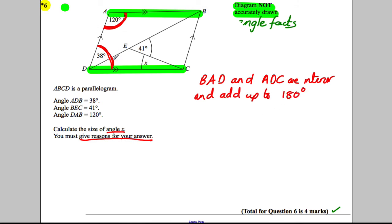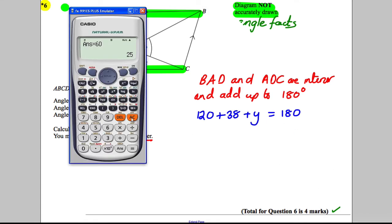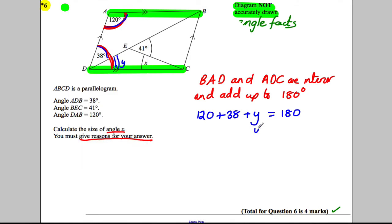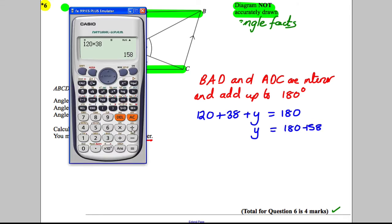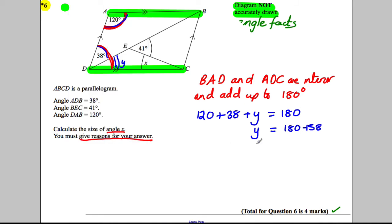OK, so if I call this here, if I call this let's say Y, we can say that 120, this angle, plus 38, this angle, plus Y must add to 180. So what's Y? Well 120 plus 38 is 158, so Y must be 180 subtract 158. So 180 subtract 158 is 22. Y is 22 degrees. So we've got that Y is 22 degrees there.